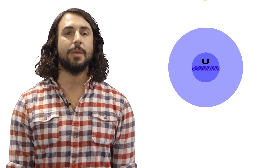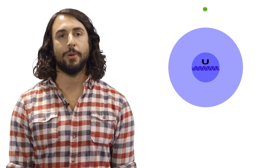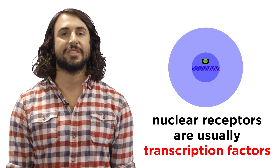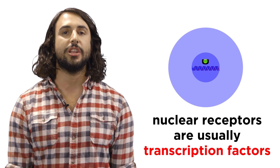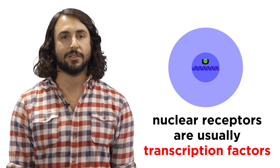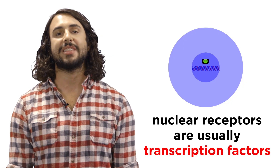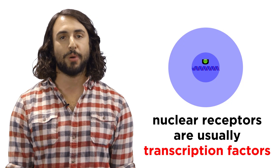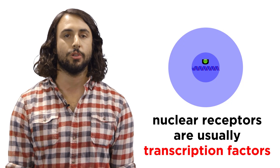Some lipid-soluble hormones pass through both the cell membrane and nuclear membrane to bind to a nuclear receptor. Nuclear receptors are typically transcription factors, which once activated will initiate the expression of a particular gene.